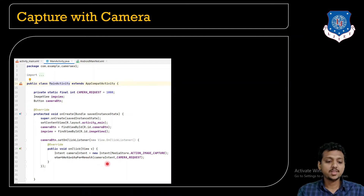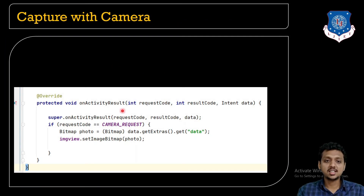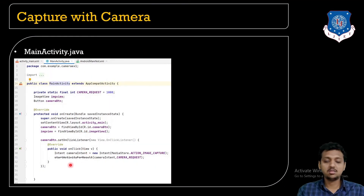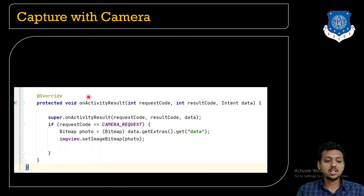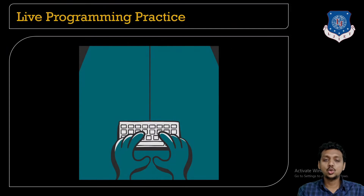Then call startActivityForResult — this method is deprecated but still works. Pass camera_intent and camera_request to it. The next method is onActivityResult. Whenever you call startActivityForResult, do not forget to override onActivityResult. Inside it, call super.onActivityResult(requestCode, resultCode, data). If the request code equals camera_request, a Bitmap called 'photo' is created from the data, and you set the ImageView with that photo.